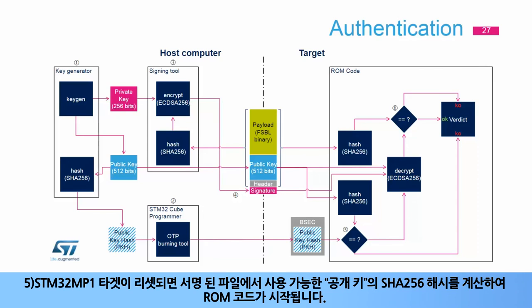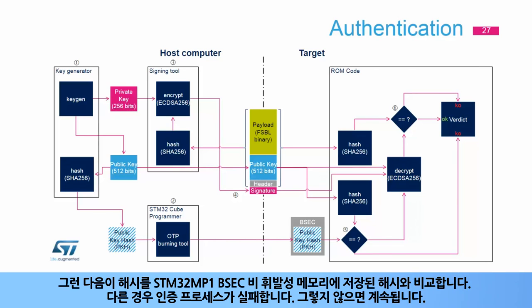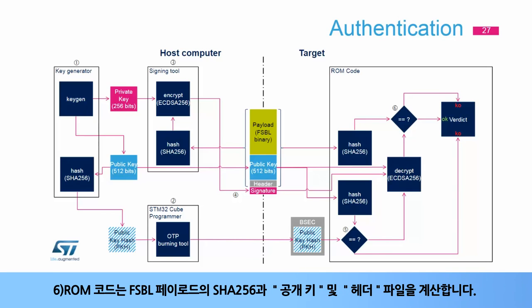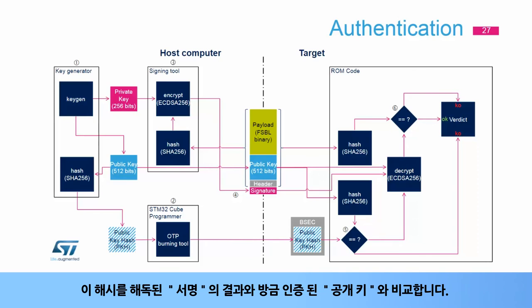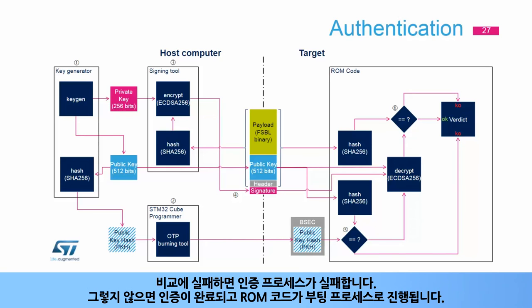Step 5: when the STM32MP1 target is reset, the ROM code computes the SHA-256 hash of the public key available in the signed file, then compares this hash with the one stored in the STM32MP1 BSEC non-volatile memory. If different, the authentication process fails; otherwise, it continues. Step 6: the ROM code computes the SHA-256 of the FSBL payload plus the public key and the file header. Step 7: it compares this hash to the value resulting from the decrypted signature with the authenticated public key. If the comparison fails, authentication fails; otherwise, authentication is successful and the ROM code proceeds with the boot process.